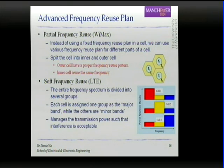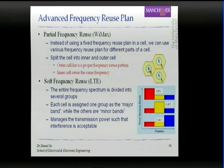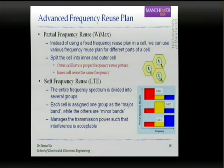By increasing power it will cause high interference to other cells. So for each cell, users nearby the base station have very low power transmission and will not create interference to another inner cell user. However, for users in the outer cell they will have to use some sort of frequency reuse planning because they will cause interference towards each other.